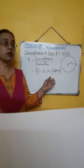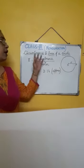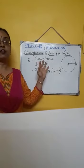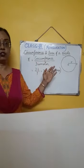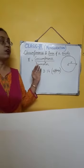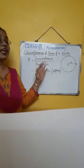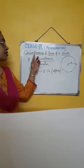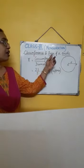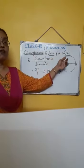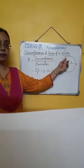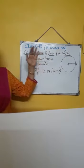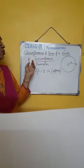Welcome, students. In class 9, you have done the first part of mensuration. Today we are going to do the second part of mensuration, that is circumference and area of a circle.